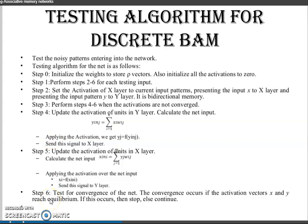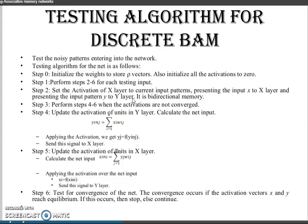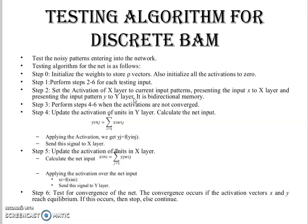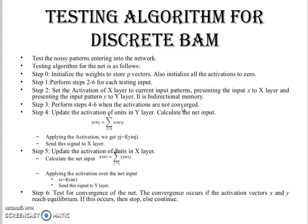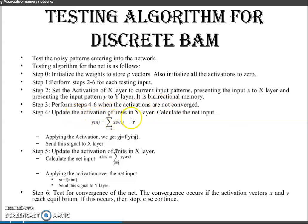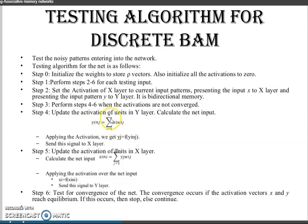Steps in the testing input: Step 2 sets the activation of the X layer to the current input patterns. Step 3 updates the activation of units in the Y layer. Now, let's calculate that y_inj equals sigma i equal to 1 to n of x_i times w_ij.